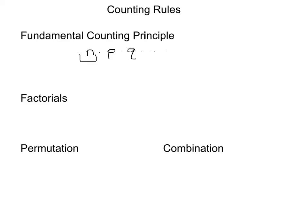how many items can they select for the first option? How many for the second? How many for the third? And keep on going for as many objects as there are, and just simply multiply those guys together. We'll look at an example of that in one second.